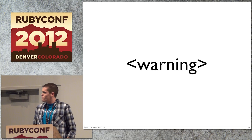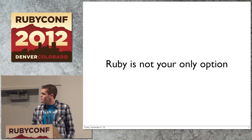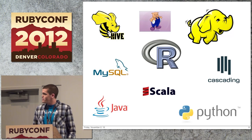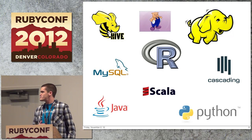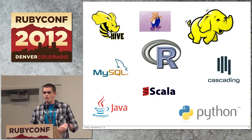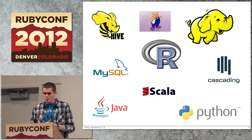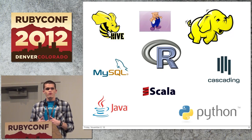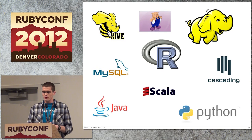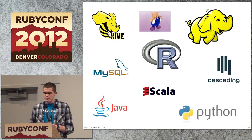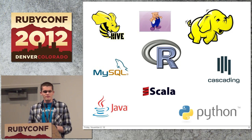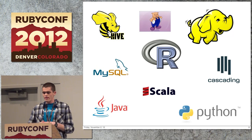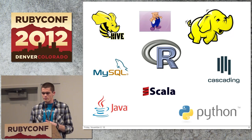Before I get started, a couple of warnings. Ruby is not your only option. The world of big data is pretty much a minefield right now — you have so many things to choose from: Hive, Pig, R, Scala, Cascading, Python, Java. You're not going to use just one of them. In my day-to-day job I use a combination of Ruby, Python, Java, R, and even a little Scala. The key is picking the right tool for the right job. But since this is a Ruby conference, I'm going to talk about the places in the data-driven product cycle where Ruby really is a good fit.